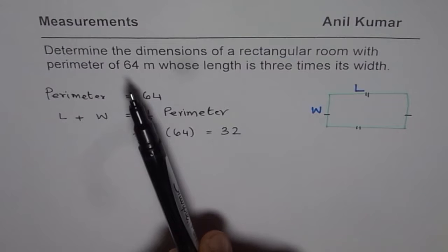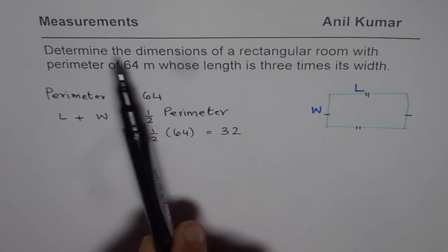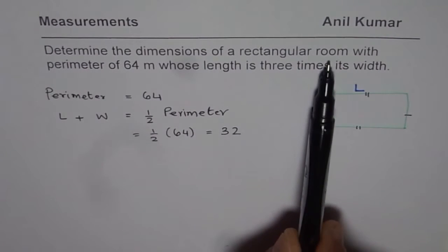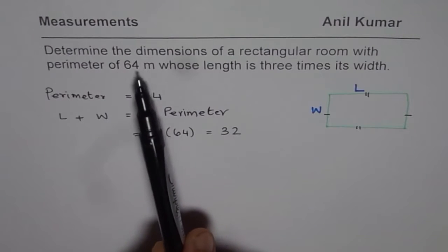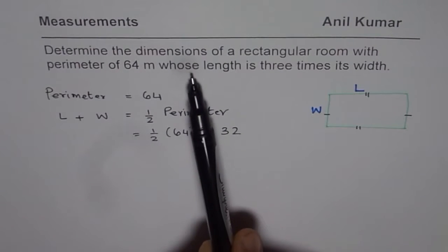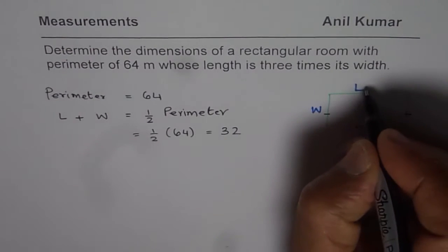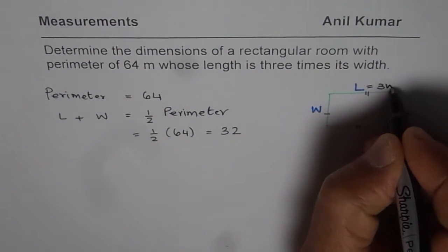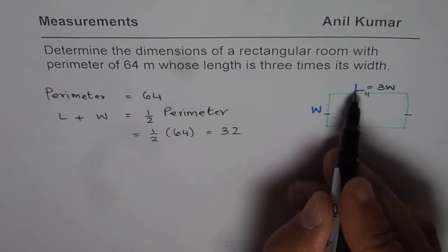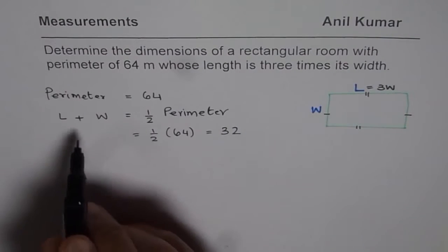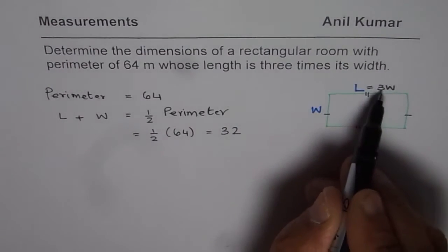Now, if you look into the question, it says determine the dimensions of rectangular room with perimeter of 64 meters whose length is three times its width. We are also given the length is three times W. Since length is three times the width, we can replace this length with three W.